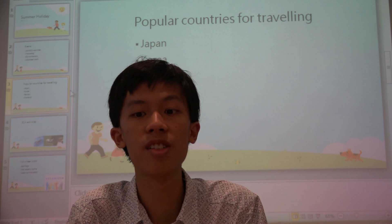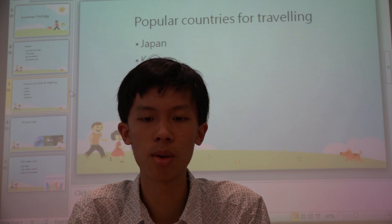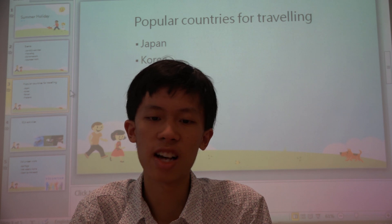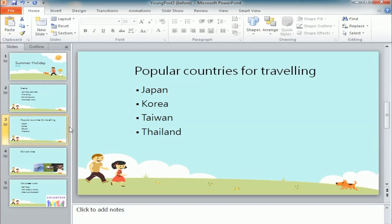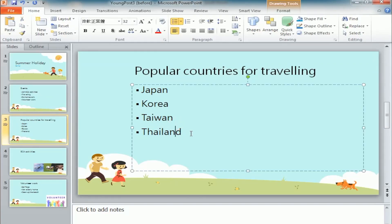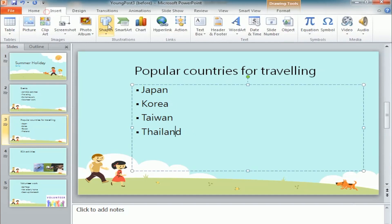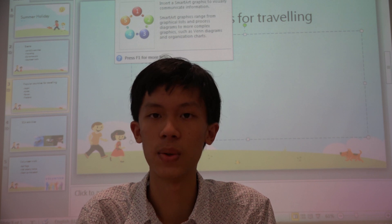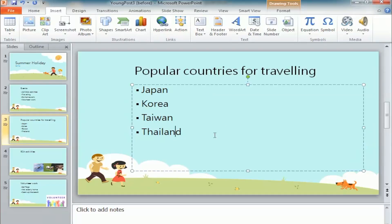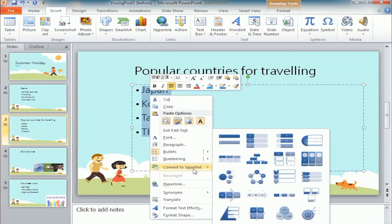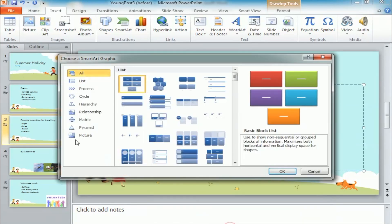There are some popular countries for traveling, but it looks so boring if every slide just lists some information like this. So we can have some creative ideas using a function called SmartArt. SmartArt is a fast process for you to make tidy and neat graphics or a list. Select them all, right-click, choose convert to SmartArt, and then more SmartArt graphics here.